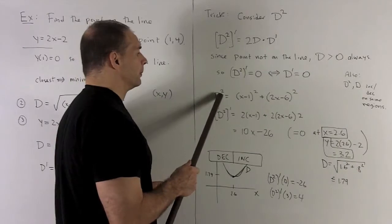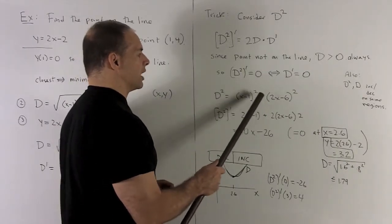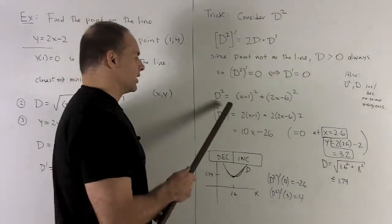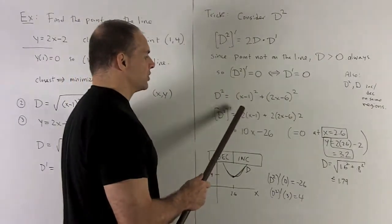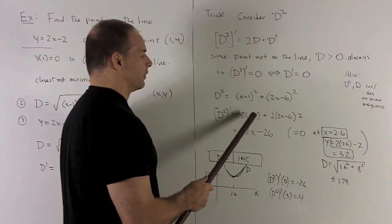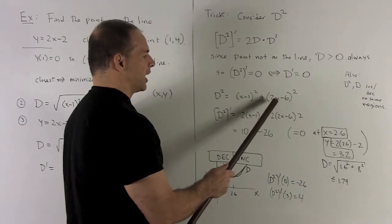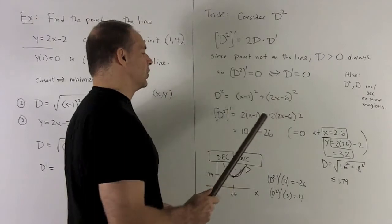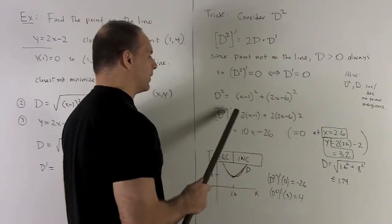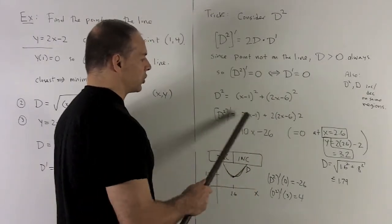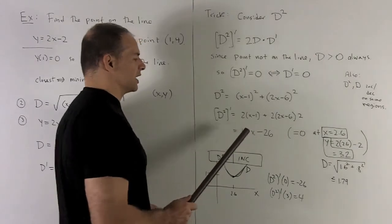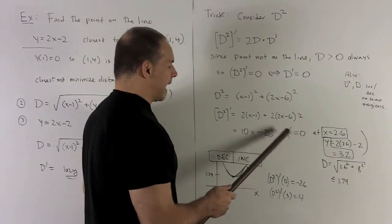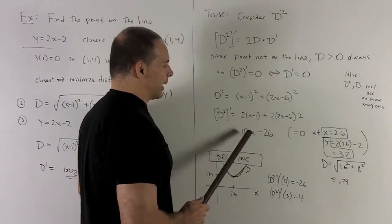So now we look at d squared. That's x minus 1 squared plus 2x minus 6 squared. No radical in sight. I take its derivative. Chain rule says 2x minus 1. The derivative of the inside is 1. Chain rule says 2. 2x minus 6. The derivative of the inside is 2. And I can work with that real easily. We collect our terms. I have 10x minus 26. And now this is going to be equal to zero. Just divide 26 by 10.